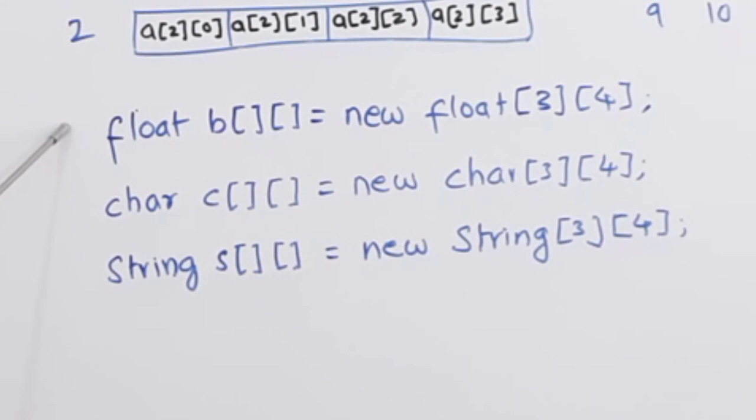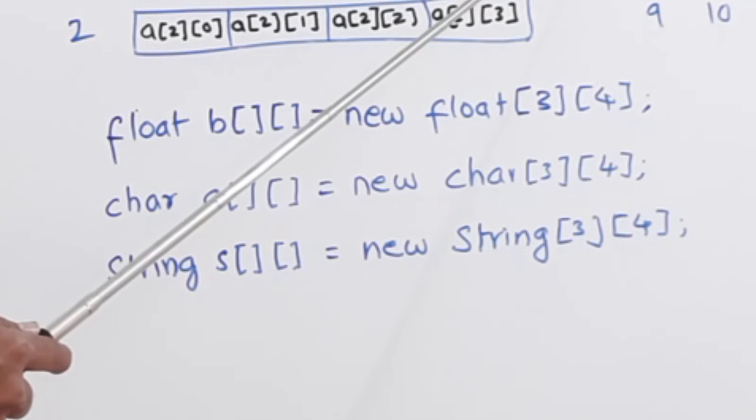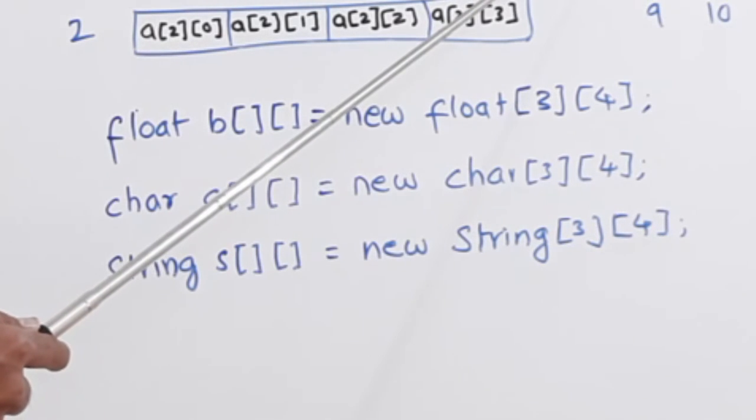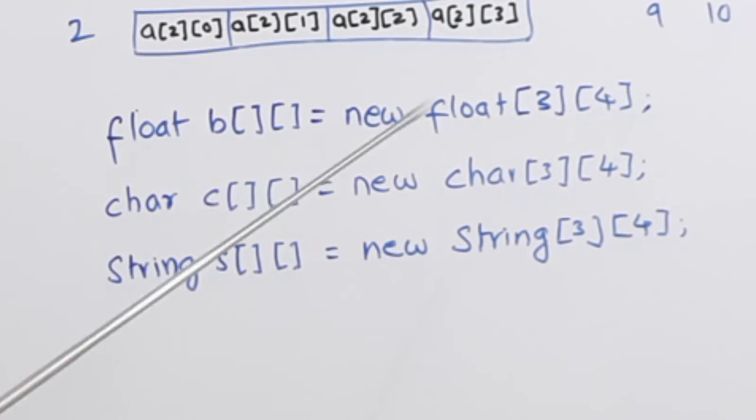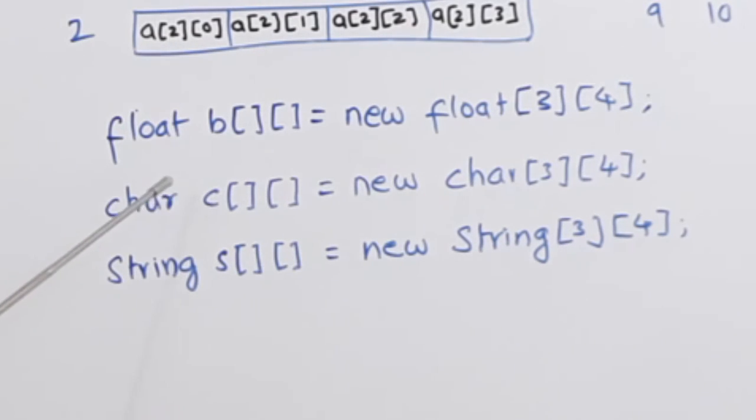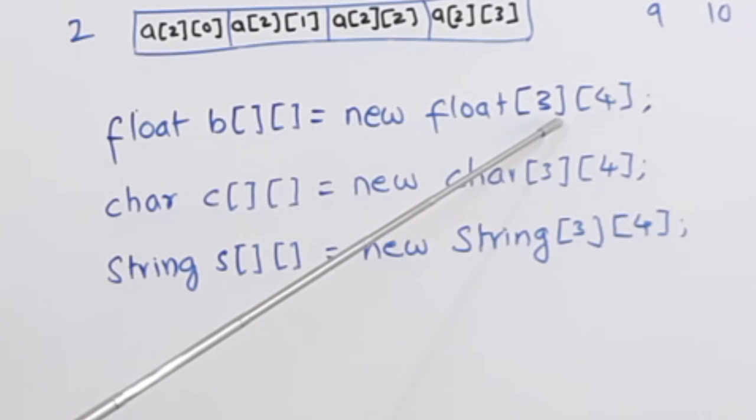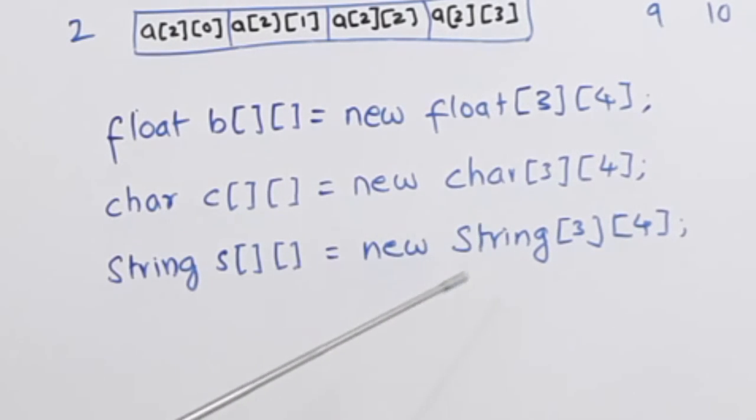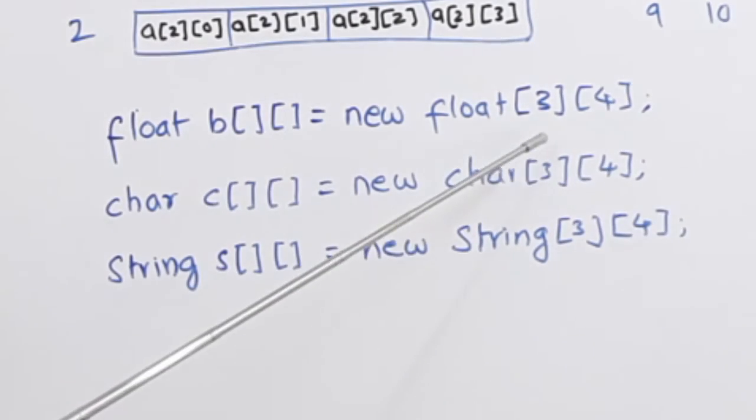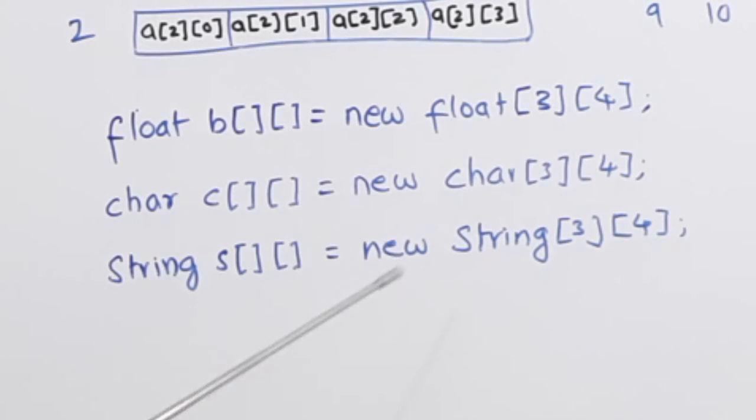Now if we want to create a float, instead of integers, if you want to write numbers with decimals, then we have to use float. So to create a double dimensional float array, we will use this notation: float b[][] = new float[3][4]. This is just an example. You can write any number that you require here.